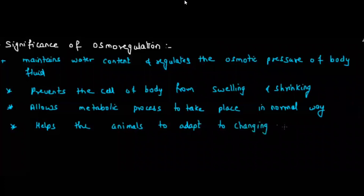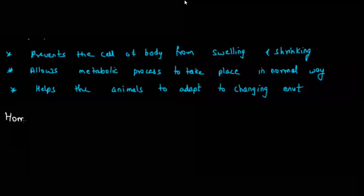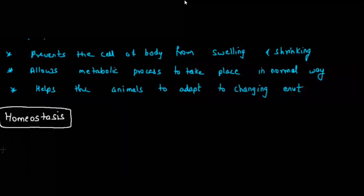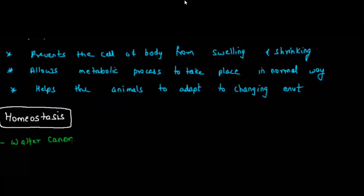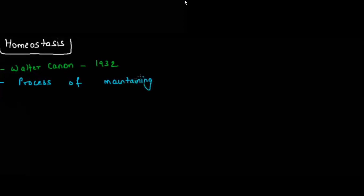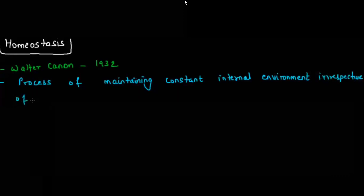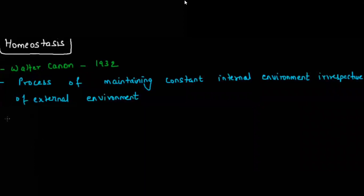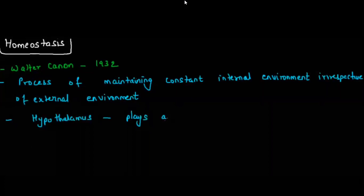Osmoregulation also helps animals adapt to a changing environment as the salt and water levels keep changing. An important related concept is homeostasis. Walter Cannon in 1932 described homeostasis as the process of maintaining a constant internal environment irrespective of the external environment. No matter what the outside conditions — rainy, winter, or summer — the body always maintains a temperature of 37°C. This is homeostasis, done with the help of the hypothalamus.